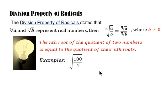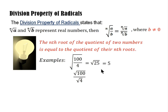Let's look at an example: the square root of (100/4). By the division property, this equals the square root of 100 over the square root of 4. On the left, 100/4 = 25, and the square root of 25 is 5. On the right, the square root of 100 is 10 and the square root of 4 is 2, so 10/2 = 5. Both sides equal 5, confirming the division property is true.